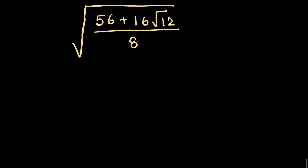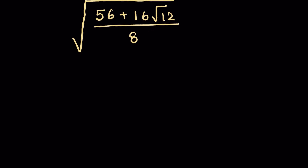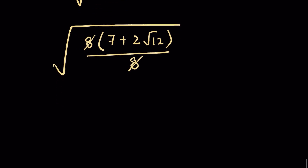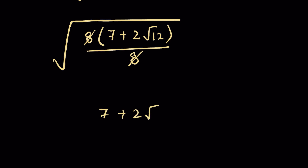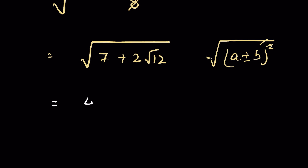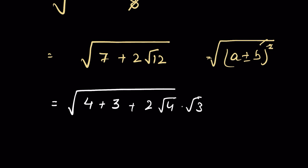So we have: 32 plus 24 equals 56, plus 16 times square root of 12, upon 8, all under a square root. Now we can take 8 common and write 8 times parenthesis 7 plus 2 times square root of 12, upon 8. The 8 and 8 cancel, and we have 7 plus 2 times square root of 12 under a square root. To further simplify, we write this number in terms of a plus or minus b whole squared so the square can remove the square root. We write 7 as 4 plus 3, and square root of 12 as square root of 4 times square root of 3.